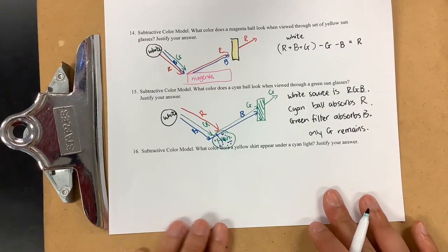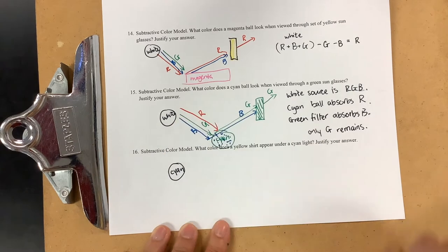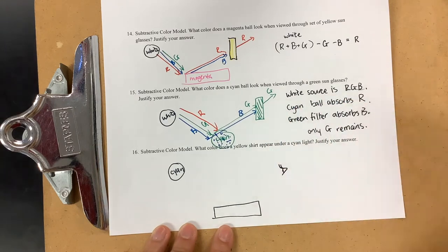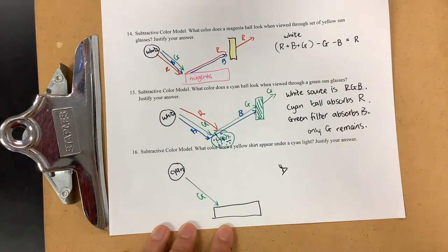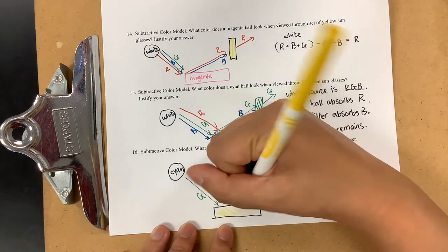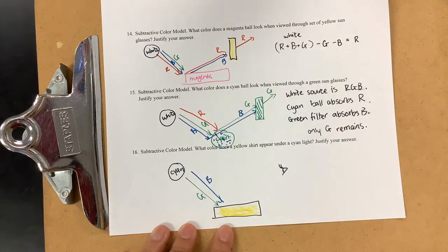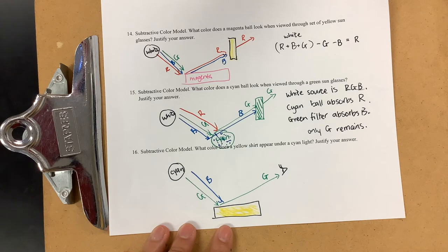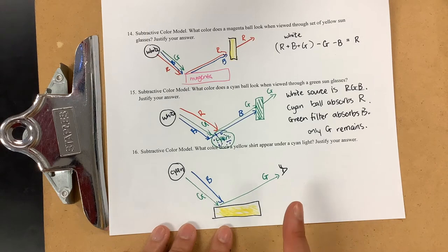For number sixteen, the light source is cyan and there is a yellow shirt. Cyan light is made of green and blue. At the yellow shirt, yellow lets green through because it's made of green, but absorbs blue because yellow and blue are opposite on the color spectrum. No blue makes it through, so green light remains — the shirt appears green.